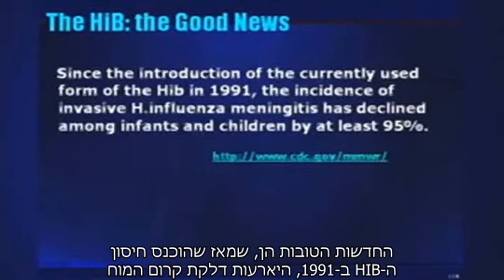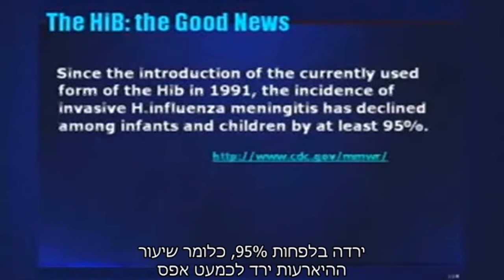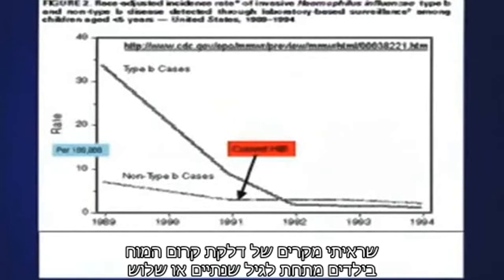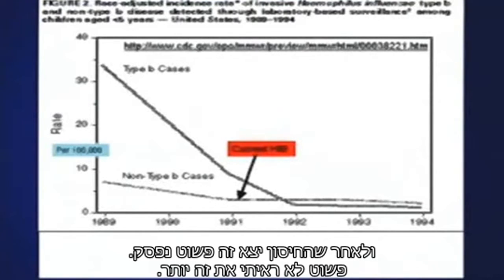The good news is that since the HIB vaccine was introduced in 1991, the incidence of HIB meningitis has declined by at least 95% — the incidence rate has gone down to almost zero. I remember as an ER doc seeing cases of H-flu meningitis in kids under the age of two or three, and after this vaccine came out, it just stopped. You just didn't see it anymore.